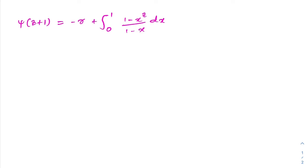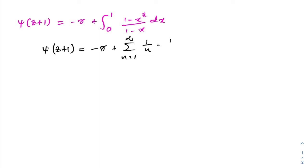The digamma function: ψ(c+1) is equal to minus γ (the Euler-Mascheroni constant) plus the integral from 0 to 1 of (1 - xᶜ) / (1 - x). In a previous video I discussed the series representation of digamma: ψ(c+1) = -γ + Σ(n=1 to ∞) [1/n - 1/(n+c)]. If you'd like to watch that video, I'll add the link in the description.